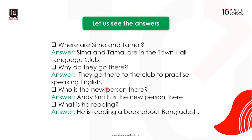First, where are Seema and Tamal? Seema and Tamal are in the Town Hall Language Club. Why do they go there? They go there to practice speaking English. Who is a new person there? Andy Smith is the new person there. What is he reading? He is reading a book about Bangladesh.